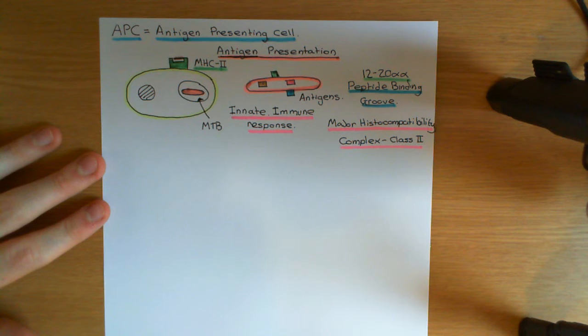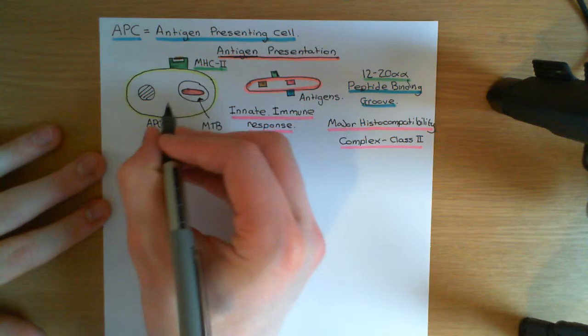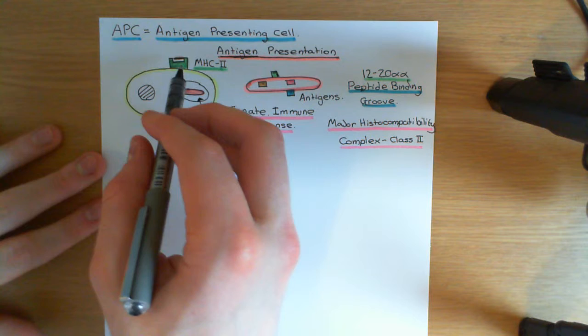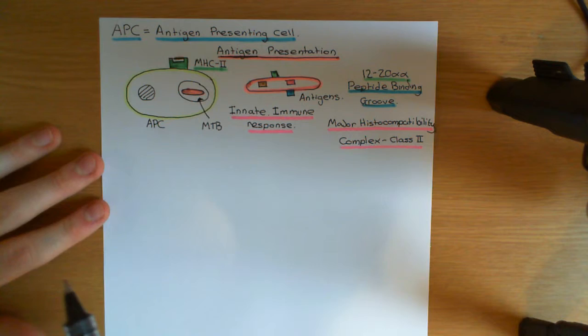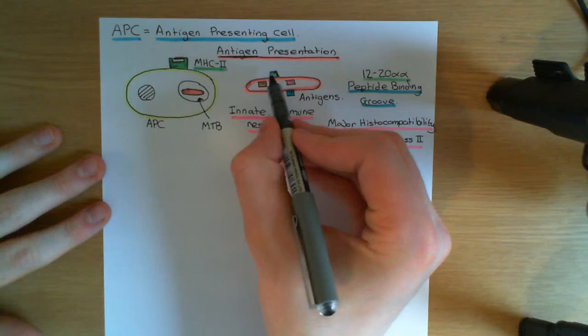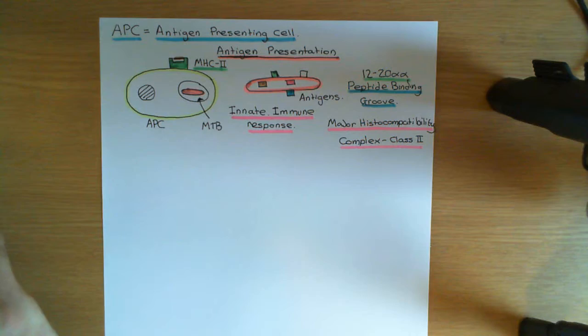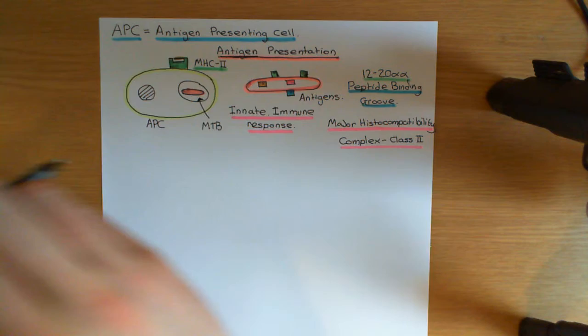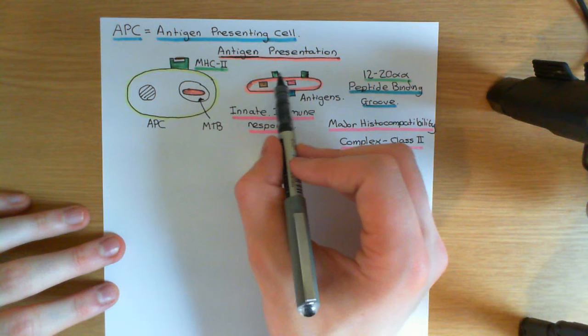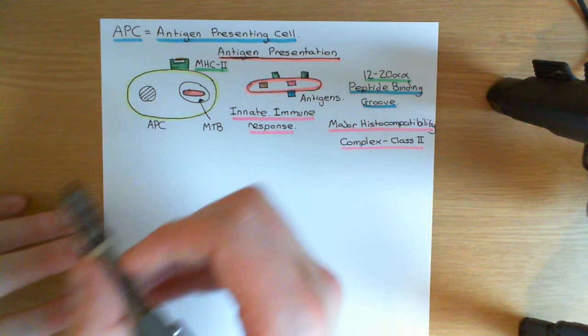The mycobacterium tuberculosis is broken down by the antigen presenting cell, which breaks down all of the antigens into little peptide fragments. These peptide fragments are put in the peptide binding grooves of MHC class II protein complexes on the surface of the antigen presenting cell. The cell ends up coated in loads of different peptide fragments from loads of different antigens of mycobacterium tuberculosis — even different peptide fragments from multiple copies of the same antigen.